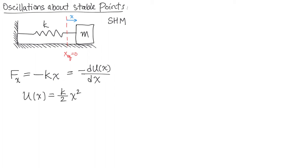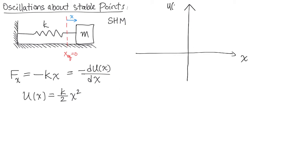Our goal today is to understand a little bit about the meaning of K, what these potential energy curves look like, and how they connect with more general potentials. If we draw out a potential energy curve, in this case we see that we have a parabola — the function U is parabolic and it goes right through the origin. Our graph is U of X as a function of X, and it looks like a parabola.